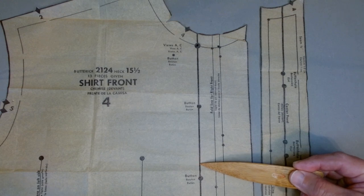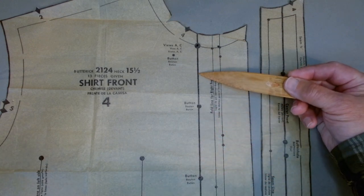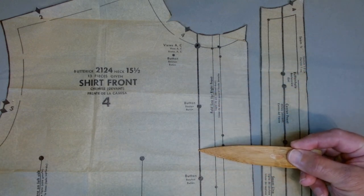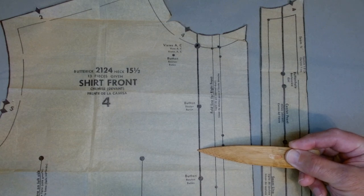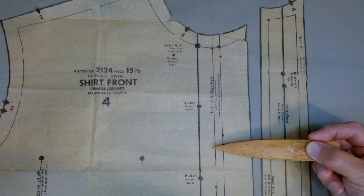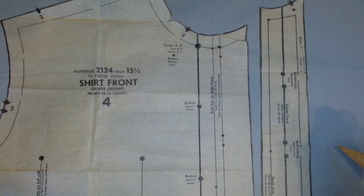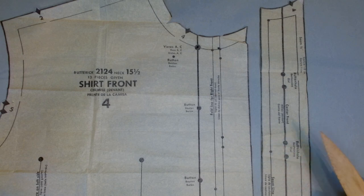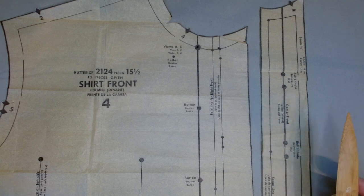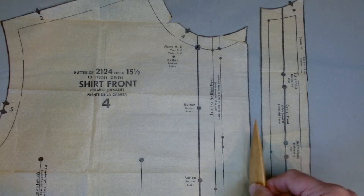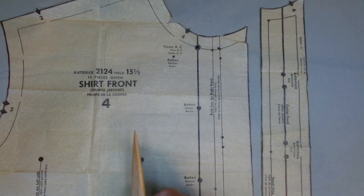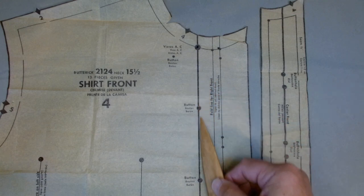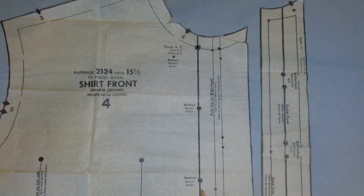You will just need to align this center front line down the center of the part of your plaid that you've designated to be your dominant stripe. That way, from the front of your shirt, your plaid will march very easily right across the front, centered right in the middle of that button band.